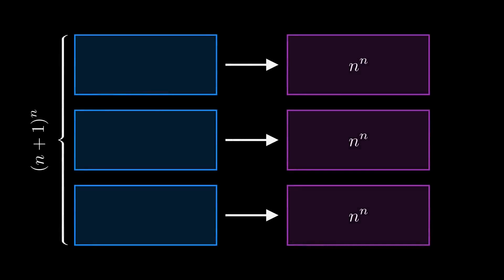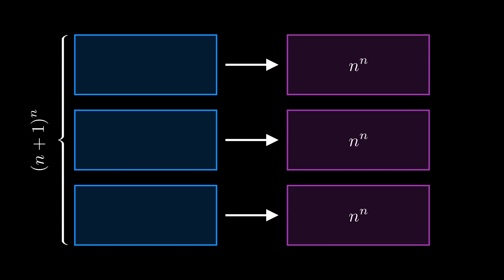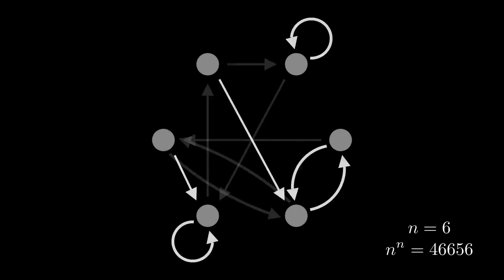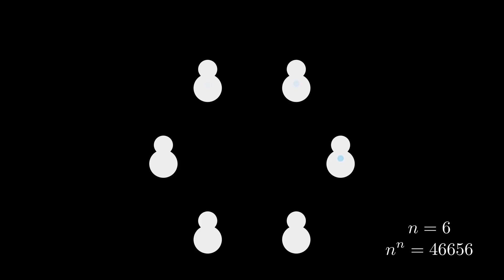Back to our inequality of interest. Here we have to show that each of our three left subsets can be separately injected into some set of size n to the n. What sets shall we choose? Well, n to the n is the number of ways of wiring a directed graph with n vertices where each vertex has one outgoing edge. But that's boring, so let's have a water balloon fight instead.